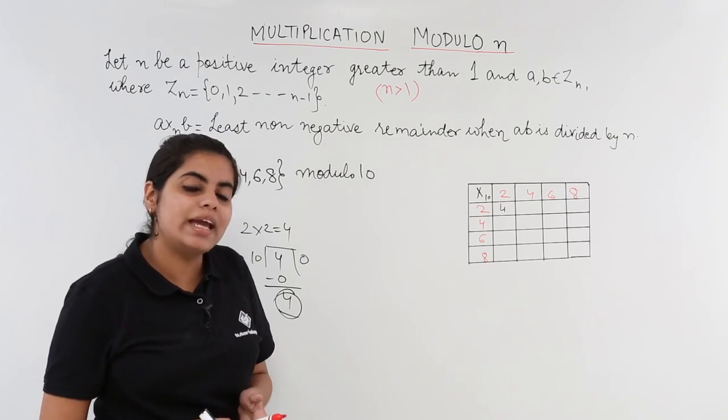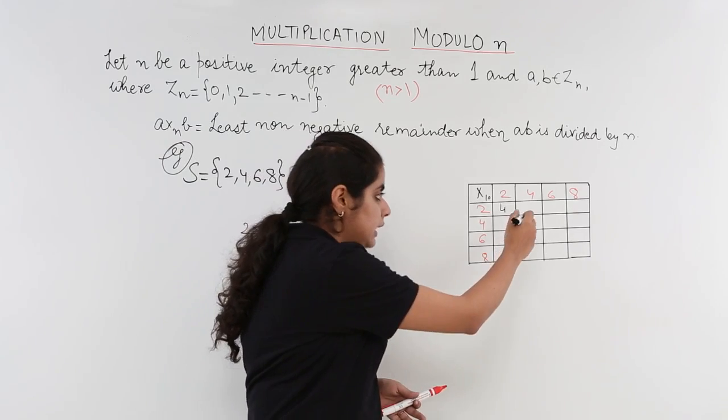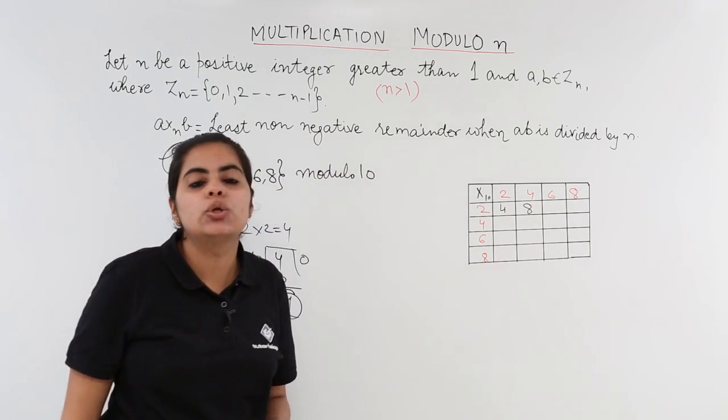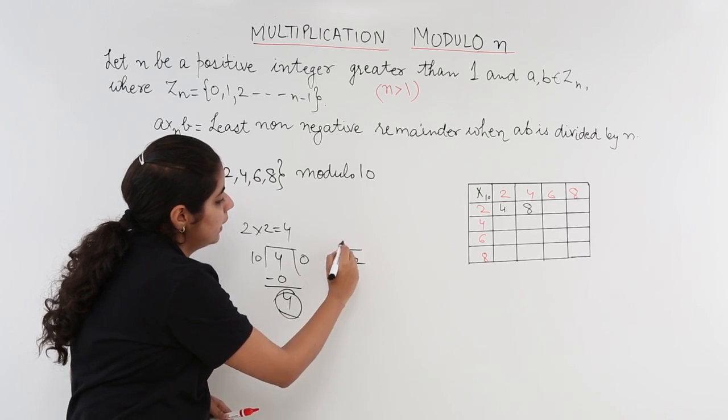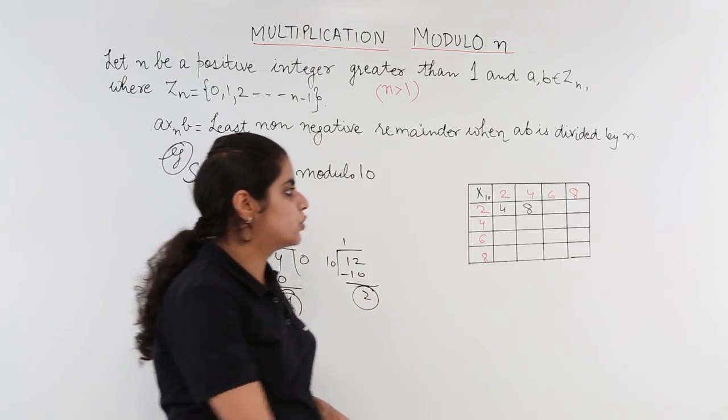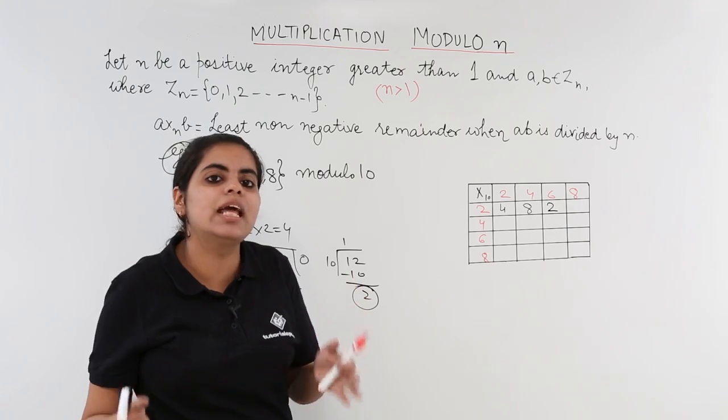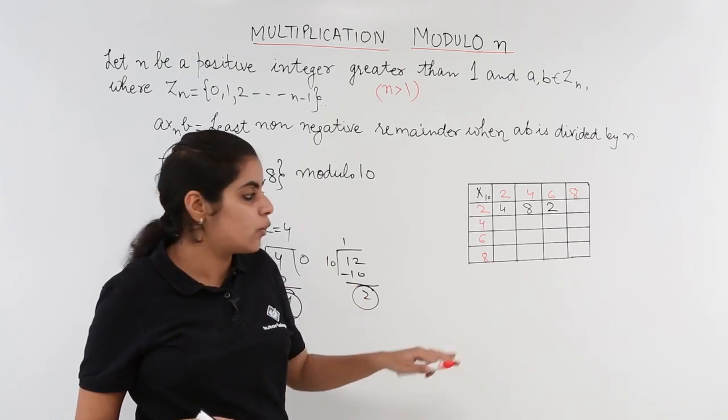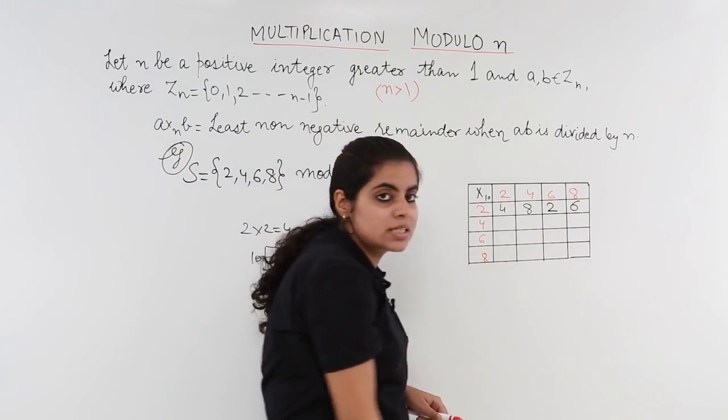Now 2 x 4 is 8. What is the remainder when 8 is divided by 10? It is 8 only. 2 x 6 is 12. Now what is the remainder when 12 is divided by 10? It is 2. So I write 2 here. Similarly just as we completed the table in the previous video we are going to solve it for here. 2 x 8 is 16. Division will give me 6 as remainder.